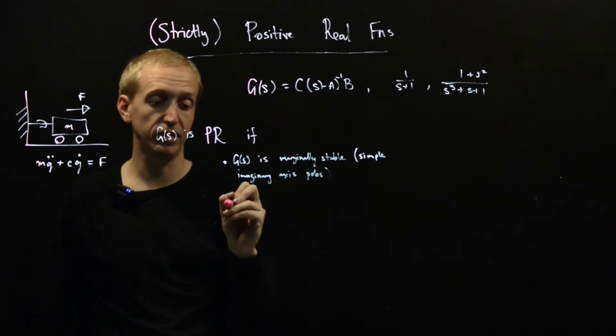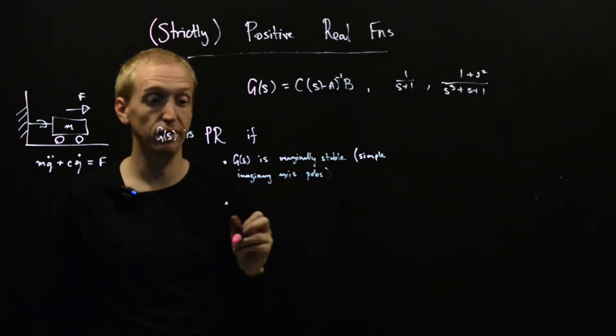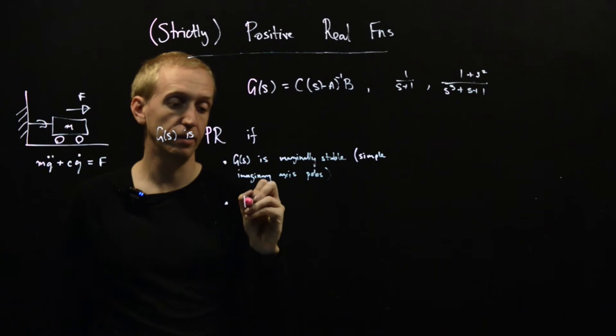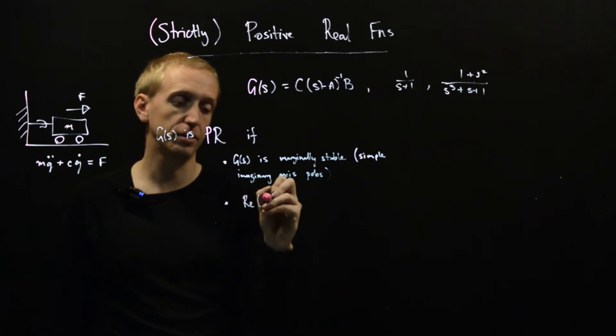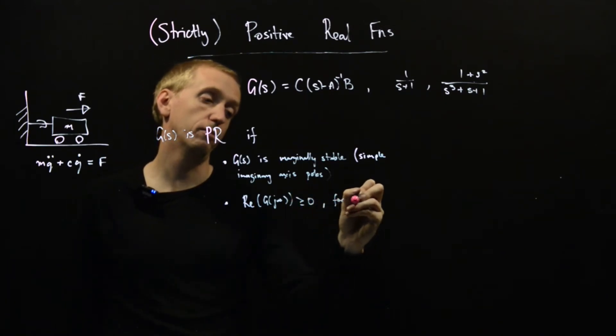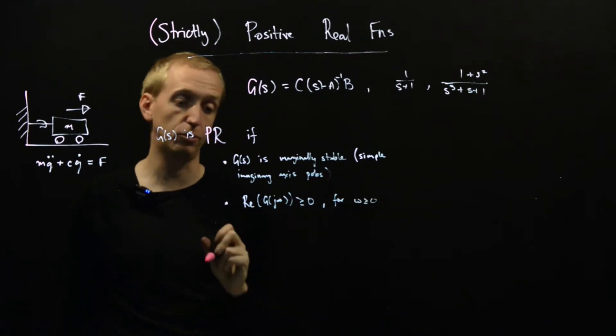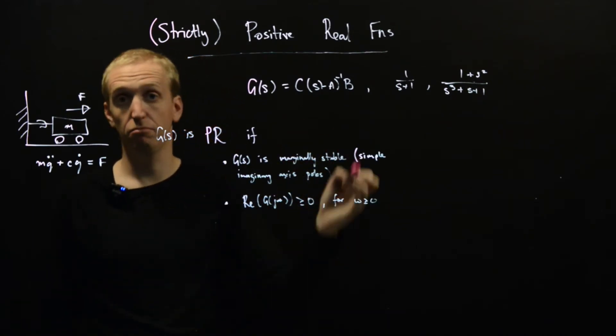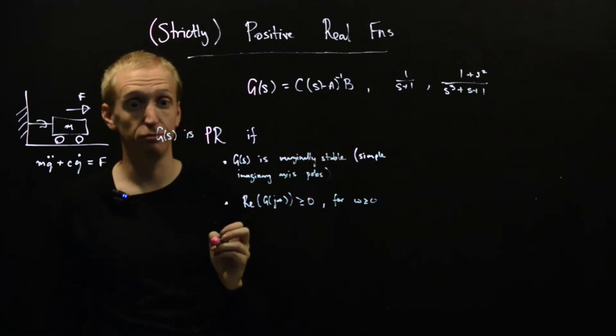So we have to have this, and then we have to have this other rather strange looking property, and that is that the real part of the frequency response of g has to be bigger than zero for all positive frequencies. So this is the definition of a positive real function.